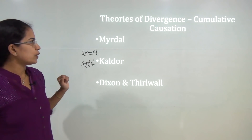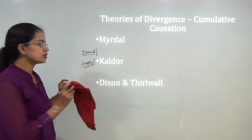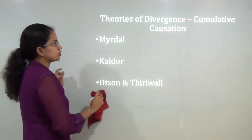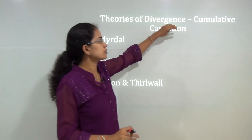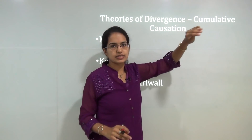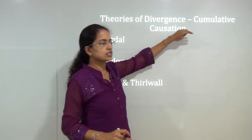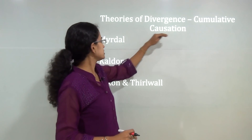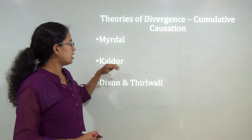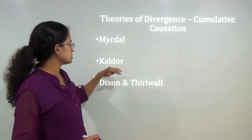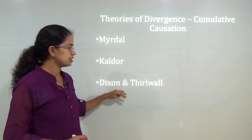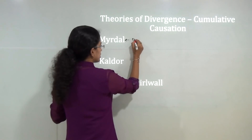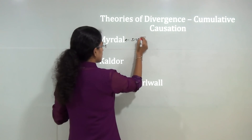To start with, we will first talk about the theories of divergence under cumulative causation. Under cumulative causation, we have two basic heads: cumulative causation and growth pole theories. Under cumulative causation, the first is Myrdal's theory, followed by Kaldor's theory and Dixon-Thirlwall's theory.